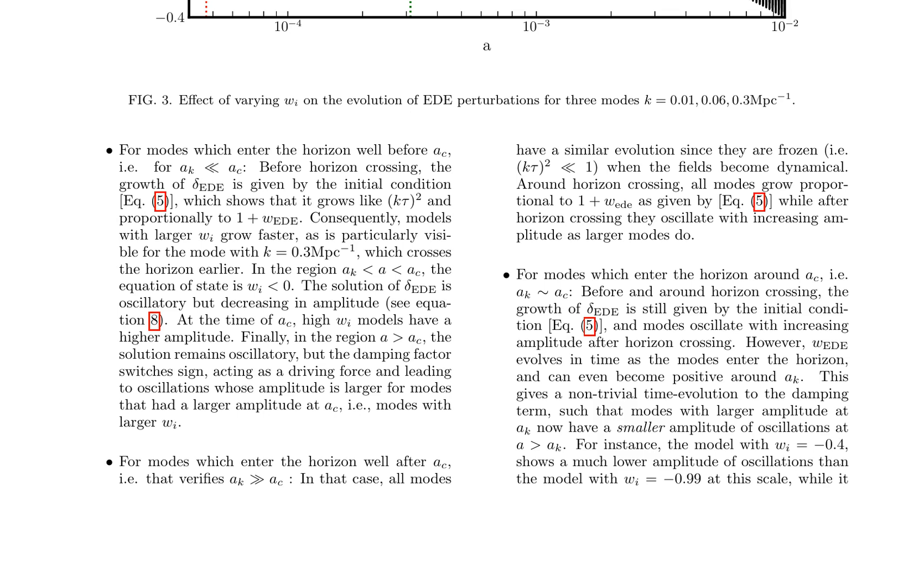For modes that enter the horizon around AC, such as k equals 0.06 Mpc inverse 1, the growth of delta EED is still given by the initial condition before and around horizon crossing. Modes oscillate with increasing amplitude after horizon crossing. However, W_EED evolves in time as the modes enter the horizon and can even become positive around AC, giving a non-trivial time evolution to the damping term. This leads to modes with larger amplitude at AC having a smaller amplitude of oscillations at a greater than AC. The figure illustrates the effects of varying W_EED on the evolution of delta EED for these three modes, providing a visual representation of the different growth and oscillation patterns discussed above.